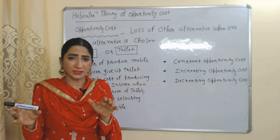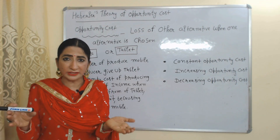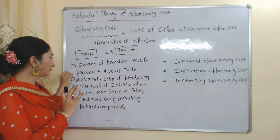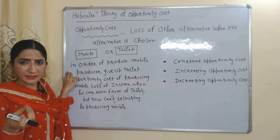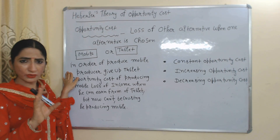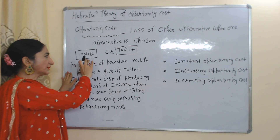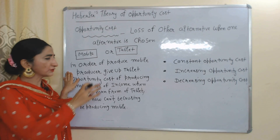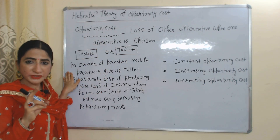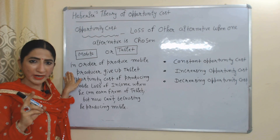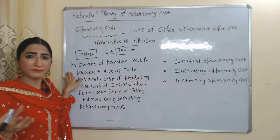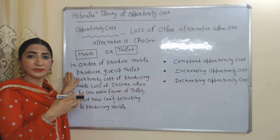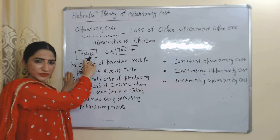For example, you have limited resources. With these limited resources you have only two options: either you can produce mobile or you can produce tablets. Suppose you decided to produce mobile and give up tablets. The opportunity cost of producing mobile is the loss of income which you can earn from the sale of tablets, but now you can't because you gave up tablets.